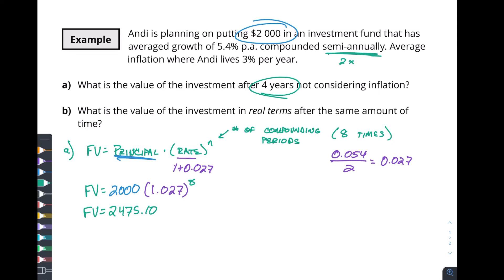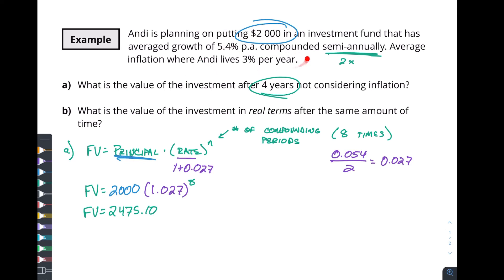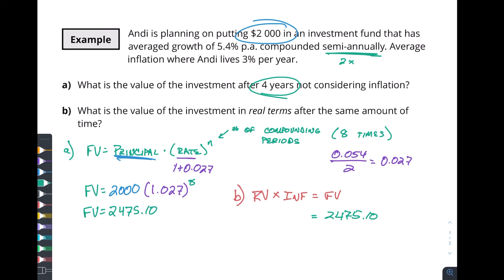That is a lot of Hershey bars! Andy is going to be very happy, but here's the problem: that $2,475 is getting reduced because inflation is reducing the value of that dollar over time. She's going to have $2,475 in her pocket, but when she goes out to buy something it will be adjusted for inflation. Since average inflation is 3% per year, this value goes down 3% per year. So: real value times inflation rate equals her future value. She wants to know what $2,475.10 is in terms of today's purchasing power.